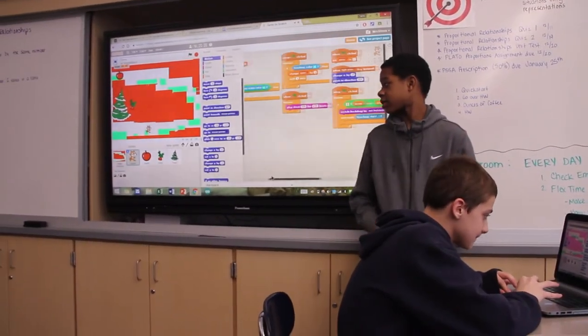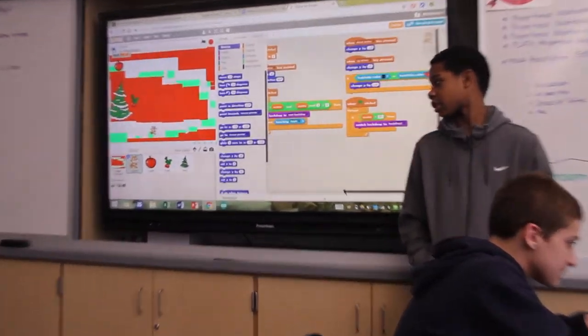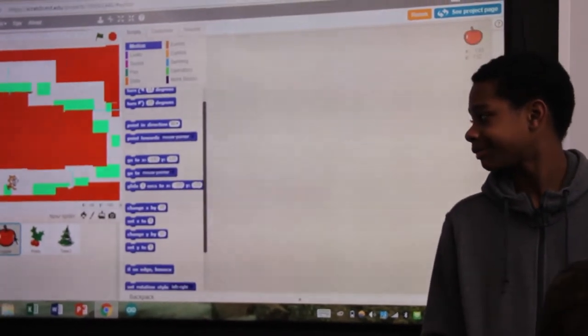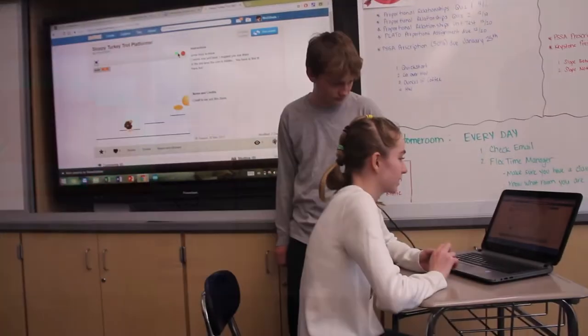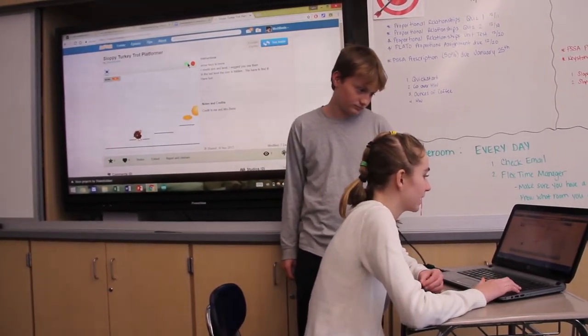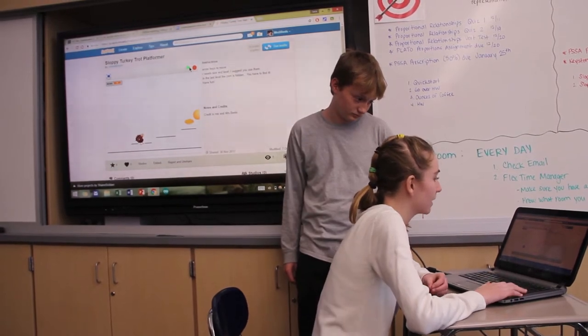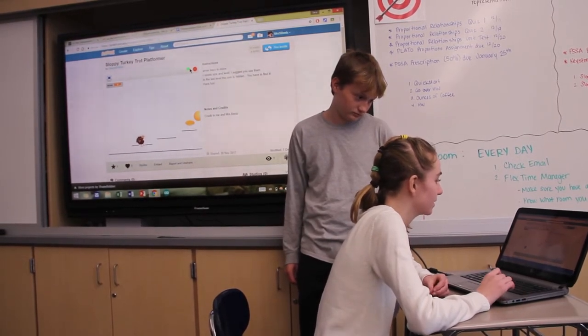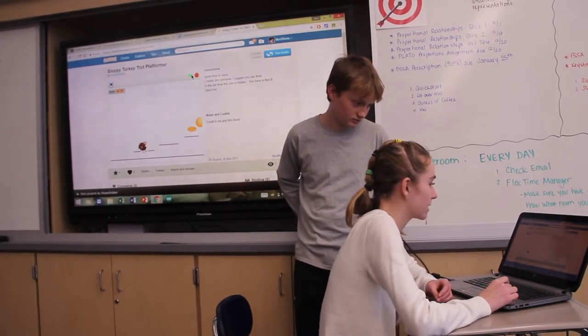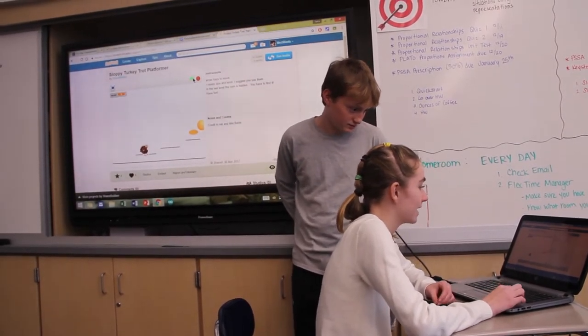And blue lines will be, so we can add score, because usually I didn't have blue lines. The instructions: arrow keys to move are reset and level. I suggest you use them. And the last level of the corn is here. You have to find it. Have fun.